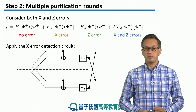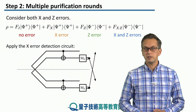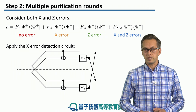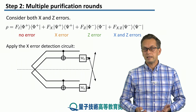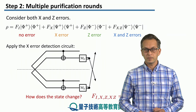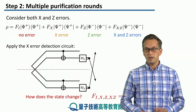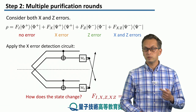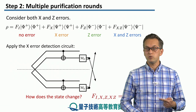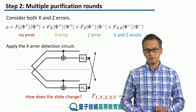We're going to apply our x error detection circuit, as we saw in the previous step. How does the state change after one application of this purification circuit? In particular, we want to compute the new Fi, Fx, Fz, and Fxz.